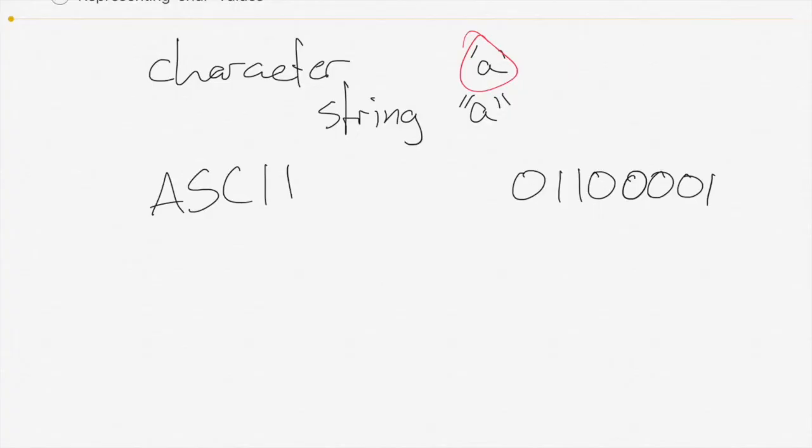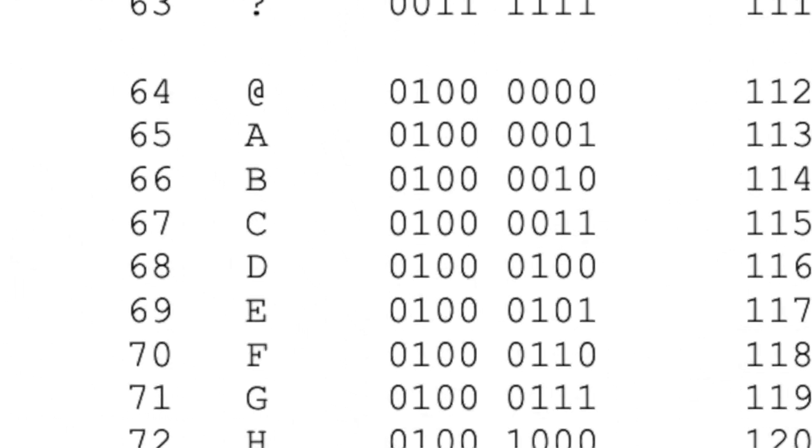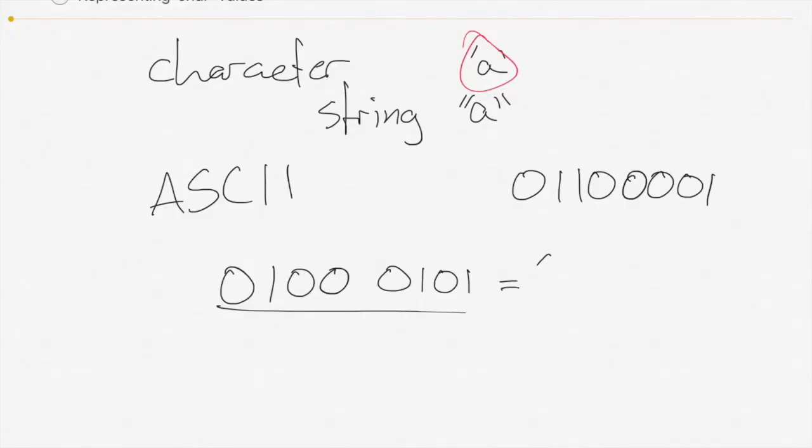So if you're provided with an ASCII code and you need to convert it into a char or vice versa, it's really as simple as just looking it up on the table. For example, a test question might ask you what is 0100 0101 in ASCII, in which case you just take that eight-digit code and look it up on the ASCII table and find out that it is equal to a capital E. And you might need to go the other way.